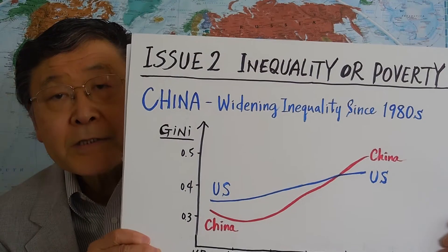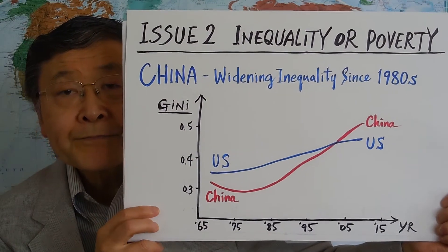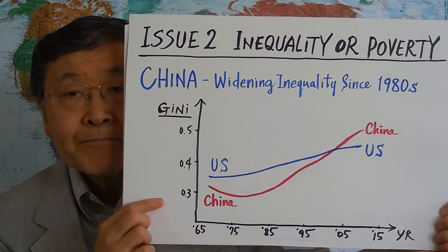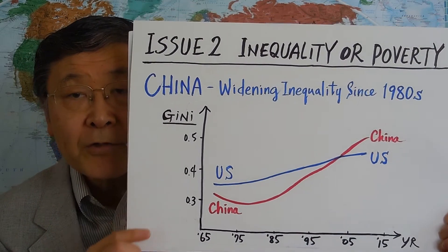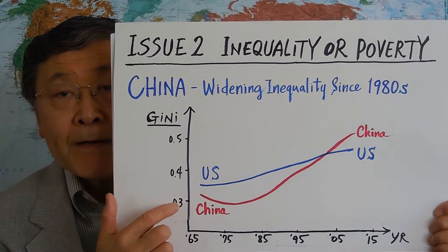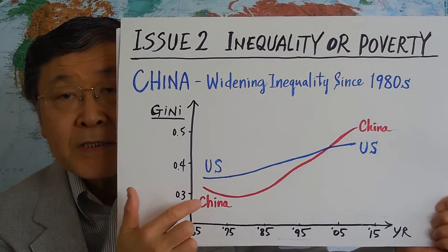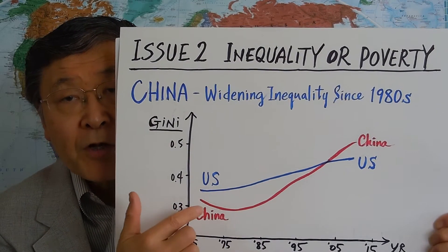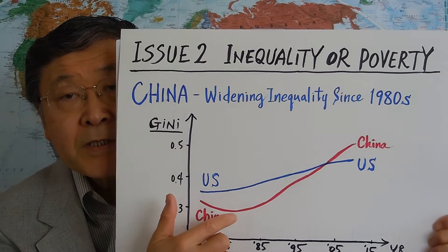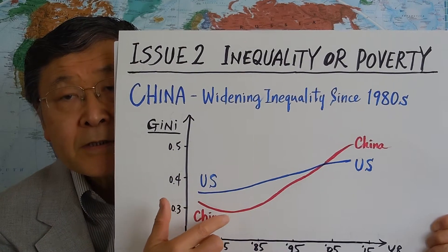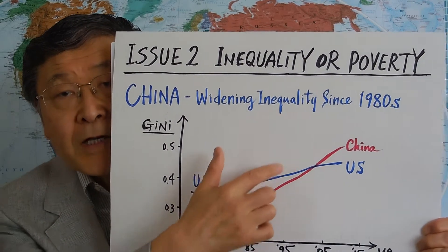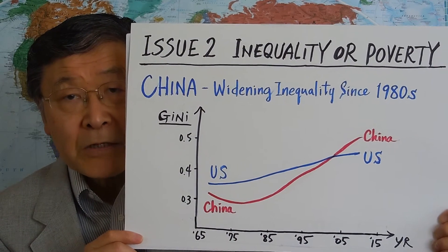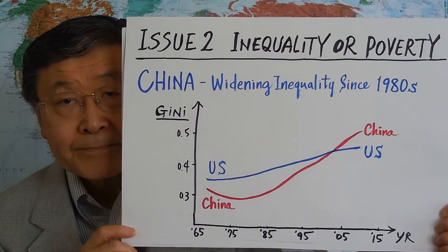You can see in this graph showing the degree of inequality over time for China and the United States. Back in the 1960s and 70s, China's degree of inequality was very low. But since the 1980s, the Gini coefficient in China has been rising very rapidly, now surpassing that of the United States. This is a problem.